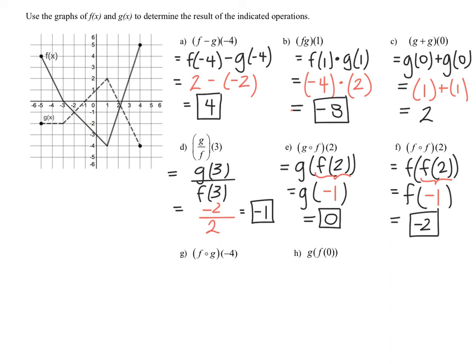Moving on to part g: f of g of negative four, rewritten as f of g of negative four. The inside function is g. When x equals negative four on function g, the y value is negative two, so g of negative four equals negative two. That becomes the input into function f, so we find f of negative two. When x is negative two on function f, the solid graph, the output is negative one. So the final answer is negative one.